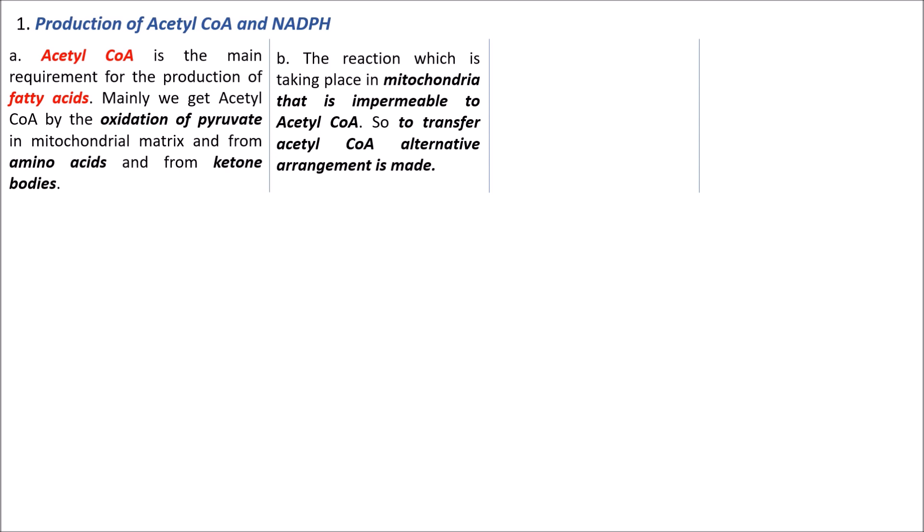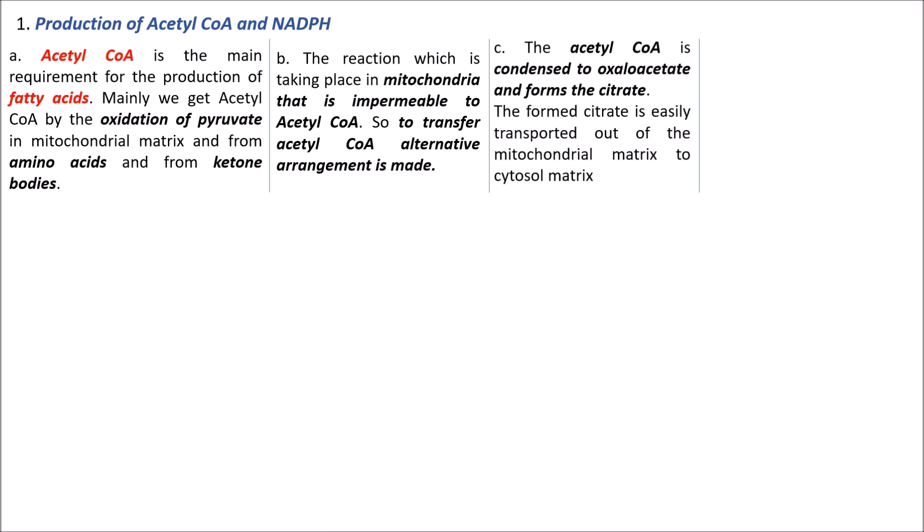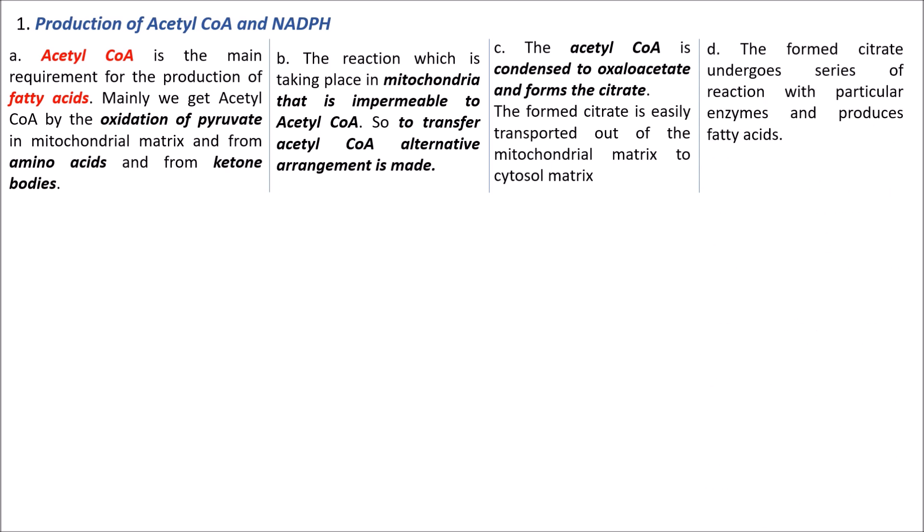An alternative arrangement is made to transfer acetyl coenzyme A from the mitochondrial matrix to the cytosol. Acetyl coenzyme A is condensed with oxaloacetate in a condensation reaction, forming citrate in the presence of the enzyme citrate synthase. Citrate is permeable to the mitochondrial membrane and easily exits the mitochondrial matrix.